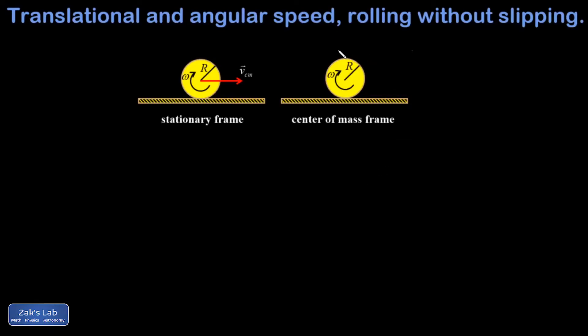Here's an object that's rolling without slipping, so the point of contact between this rolling object and the ground must be stationary. All along the edge of this round object you have different velocities — some parts are moving up and at an angle, some parts are moving down and at an angle. The point right on top is moving to the right, and that one point of contact with the ground is stationary at this precise moment in time; otherwise you would have slipping.